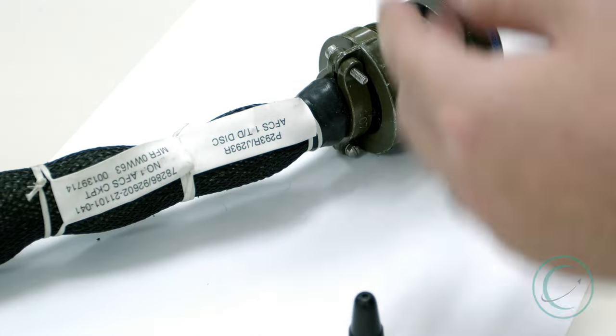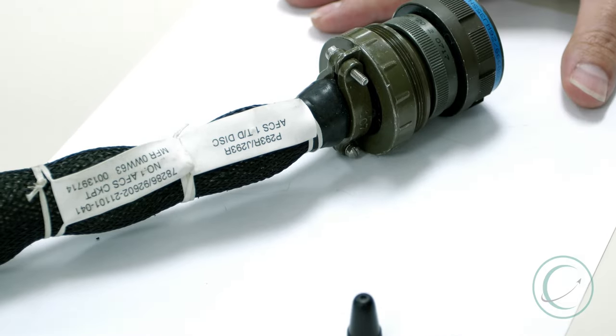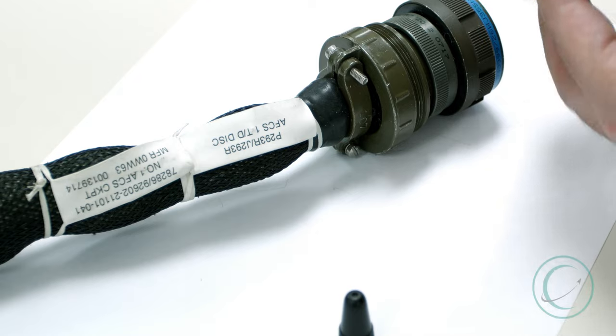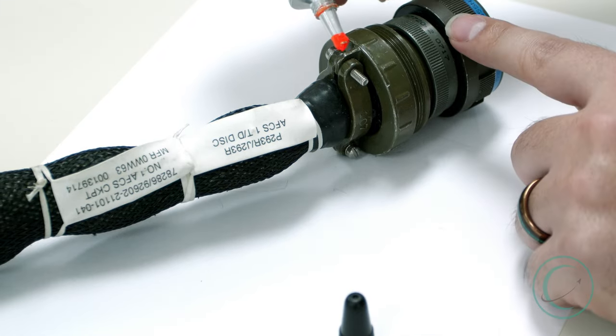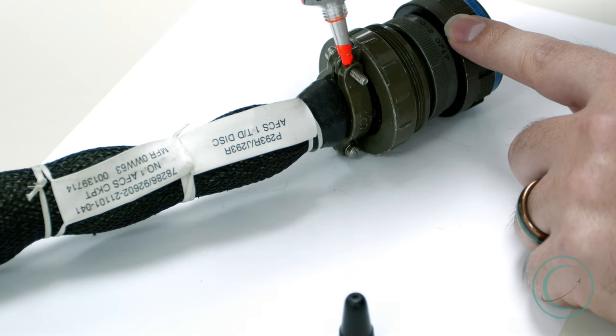To demonstrate application of anti-sabotage, we're using this training harness here, and as you can see, we're not on an official harness. The anti-sabotage would be very cleanly applied over the threads and the metal connection that occurs between the back shell.